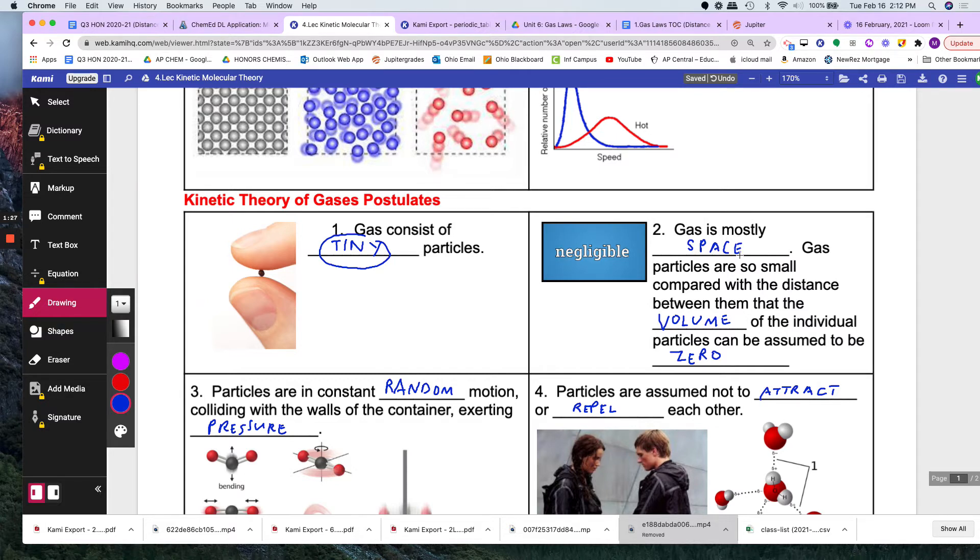Second, gas is mostly space. So if you take your room and you take all the little particles of gas molecules and you put them in your hand you will not even be able to see them. Gas is mostly space. Gas particles are so small compared to the distance between them that the volume of the individual particles can be assumed to be zero. So those are zero volume. So it's mostly space.